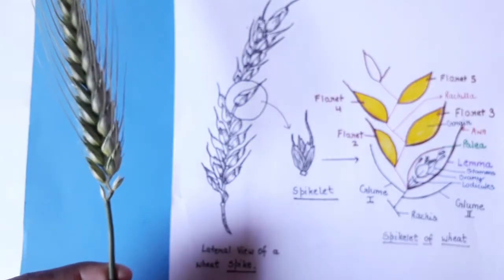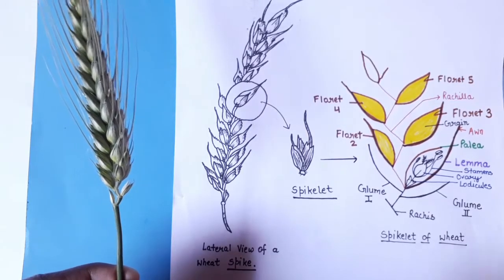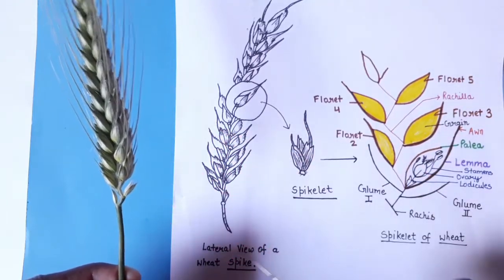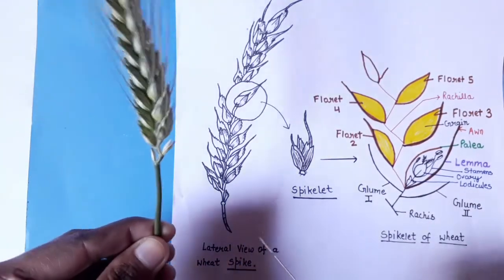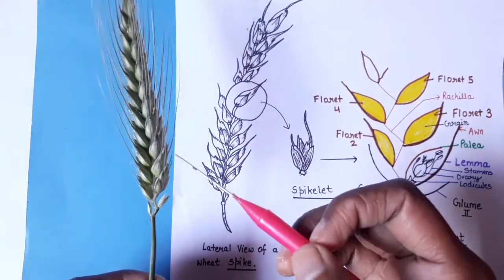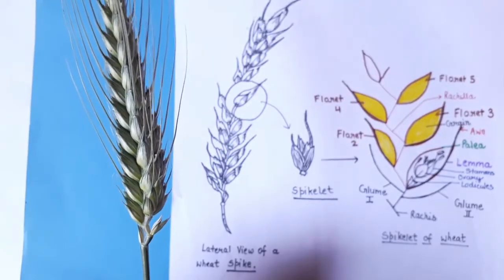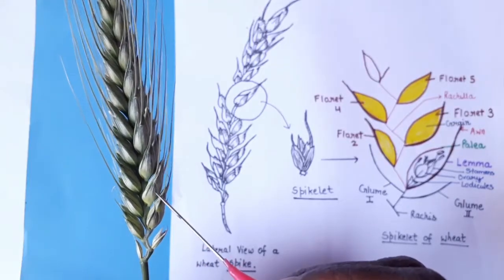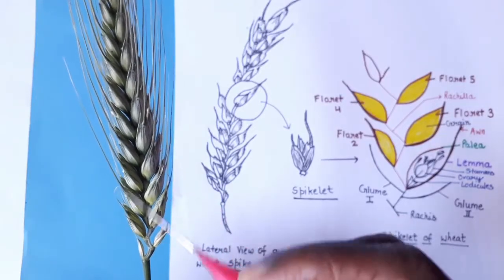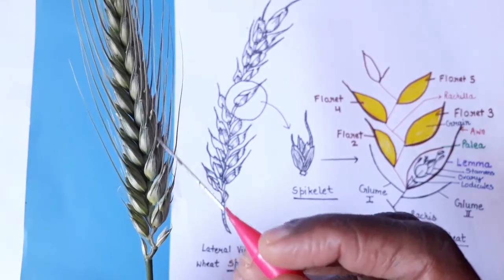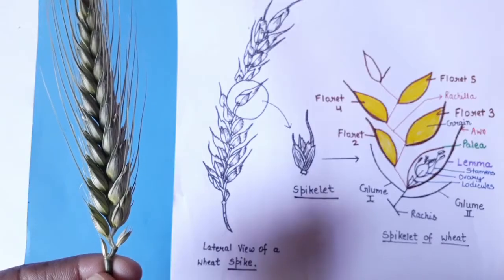The inflorescence of Triticum aestivum — wheat — is termed as spike of spikelet. This whole inflorescence is called a spike, shown here in a lateral view of the wheat spike. This spike consists of lots of small tiny structures which are referred to as spikelets, and these spikelets are arranged on a common axis in the form of a spike.